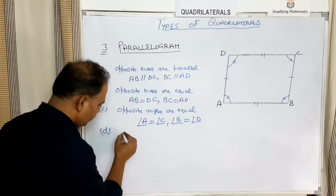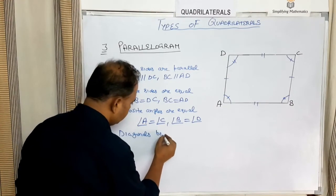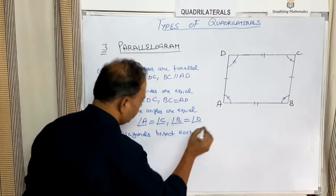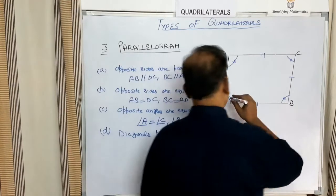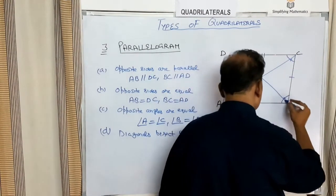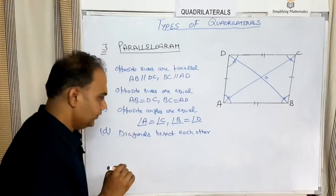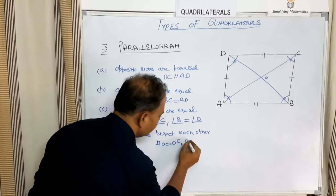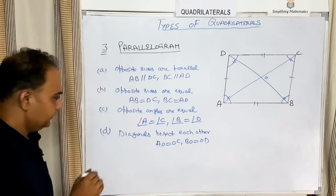The next property of a parallelogram is that the diagonals bisect each other. If the diagonals intersect at point O, then AO equals OC and BO equals OD.